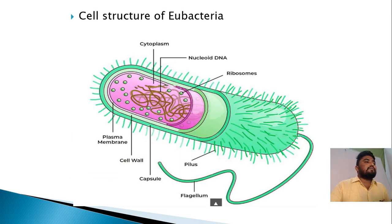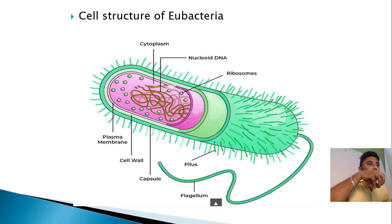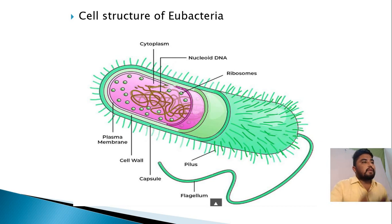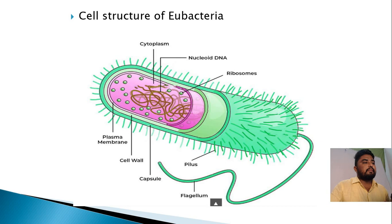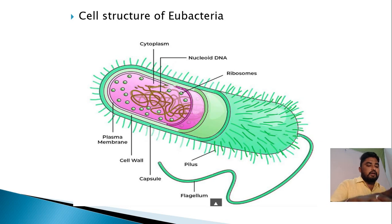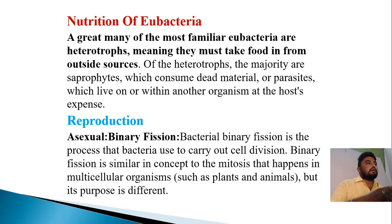The cell structure of eubacteria has two membranes: an outer membrane and an inner membrane. They contain cell organelles including cytoplasm, nucleoid DNA, ribosomes, plasma membrane, cell wall, capsule, pili, and flagellum. These are all present in the eubacteria of the cyanobacteria group.